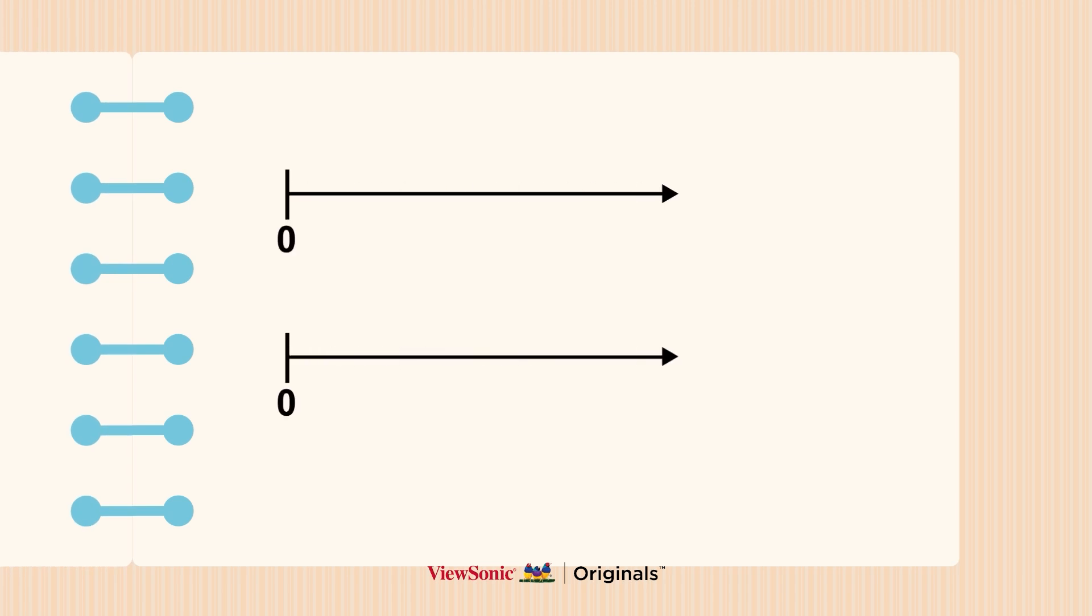Let's try again on the number line. Divide the number lines into two and four segments respectively. We can see that two-fourths and one-half are located on the same point.